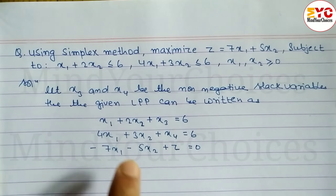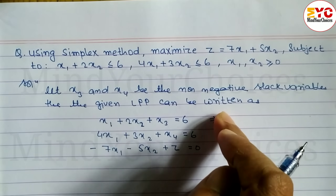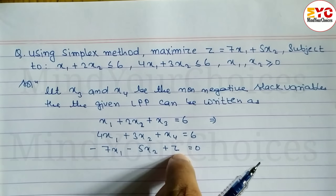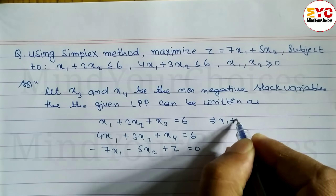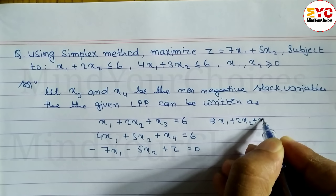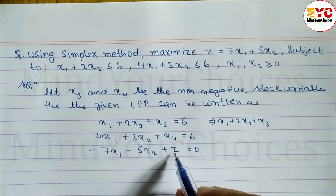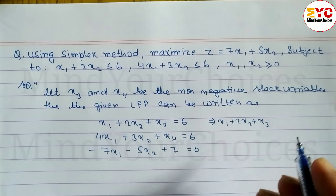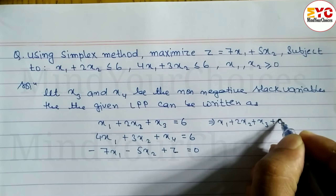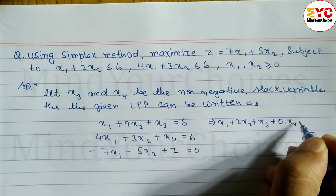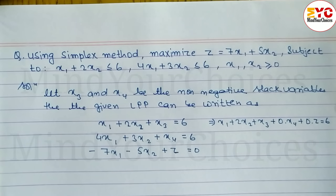Now we write the system in standard simplex tableau form. The variables are x1, x2, x3, x4, and z. The first equation becomes: x1 plus 2x2 plus x3 plus 0 times x4 plus 0 times z equal to 6.